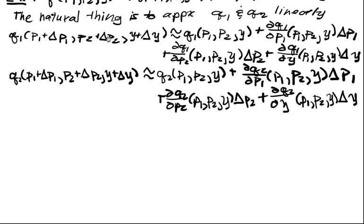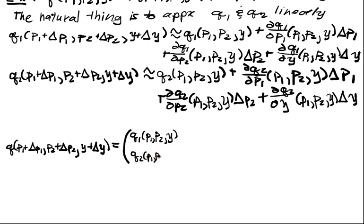If I put this all together in a matrix then I'm going to have Q of P1 plus delta P1, P2 plus delta P2, Y plus delta Y. That's going to be equal to, the first component will have a constant term of Q1 of P1, P2, Y and Q2 of P1, P2, Y.